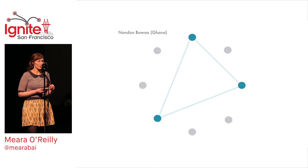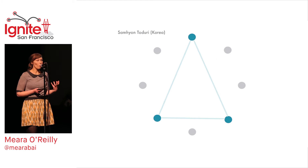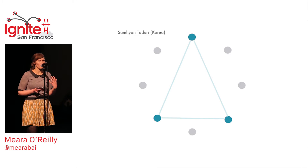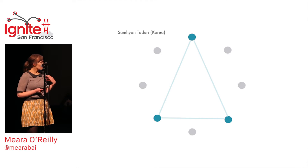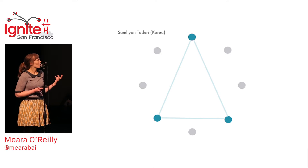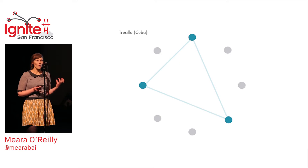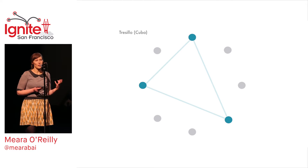In fact, rotating a rhythm can be the only difference between popular rhythms in multiple cultures. Variations of the Hound Dog rhythm are found not only in Ghana, but in Cuba and Korea as well.